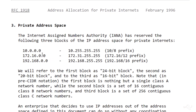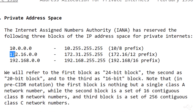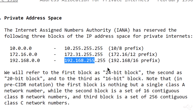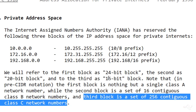Here are those private address spaces. In class A, it's 10. Class B is 172.16 through 172.31. Class C is 192.168.0 through 192.168.255. Some people get confused because they see the slash 16 prefix and think a double-255 subnet mask, which makes them think class B. But no, this is just a 16-bit block — a set of 256 contiguous class C network numbers. While it might appear to be class B mathematically, it's actually that set of 256 class C networks: 192.168.0, 192.168.1, 192.168.2, and so on.